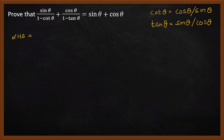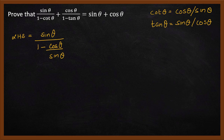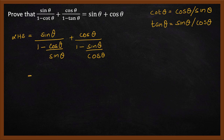So the left hand side is given by sine theta divided by one minus cot theta, plus cos theta divided by one minus tan theta. Replacing cot by cos theta over sine theta and tan by sine theta over cos theta, this can be written as sine theta divided by — if you simplify the denominator — you have sine theta minus cos theta.